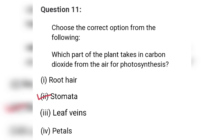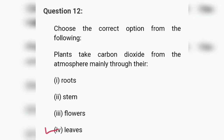Question eleven: which part of the plant takes in carbon dioxide from the air for photosynthesis? The options are root, stomata, leaf veins, and petals — the correct answer is stomata. Question twelve: plants take carbon dioxide from the atmosphere mainly through their — roots, stem, flowers, or leaves? The correct answer is leaves.